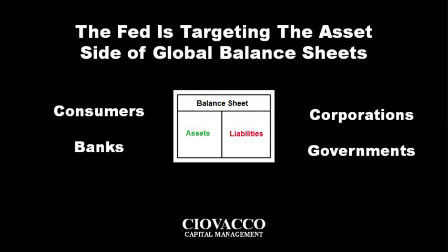A fair question may be: why is the Fed printing all this money and what are they trying to accomplish? A common problem around the globe is weak balance sheets — from consumers to corporations, to municipalities, all the way up to Uncle Sam's asset and liability ledger.